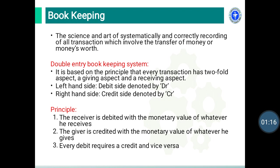The principles of double entry bookkeeping: First principle — the receiver is debited with the monetary value of whatever he receives, while the giver is credited with the monetary value of whatever he gives. Third rule — every debit entry requires a credit entry and every credit entry requires a debit, that is vice versa.